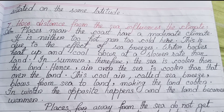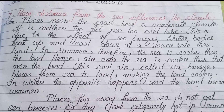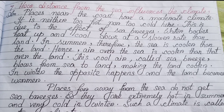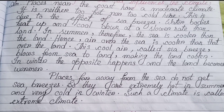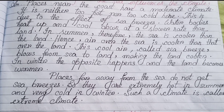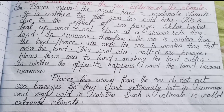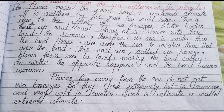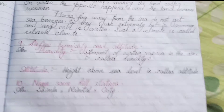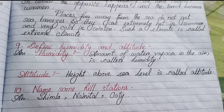Number seven: How does distance from the sea influence the climate? Places near the coast have a moderate climate — it is neither too hot nor too cold. This is due to the effect of sea breezes. Water bodies heat up and cool down at a slower rate than land. In summer, the sea is cooler than the land, so the cool air — called sea breeze — blows from sea to land, making the land cooler. In winter, the opposite happens and the land becomes warmer. Places far away from the sea do not get sea breezes, so they are extremely hot in summer and very cold in winter — such a climate is called extreme climate.